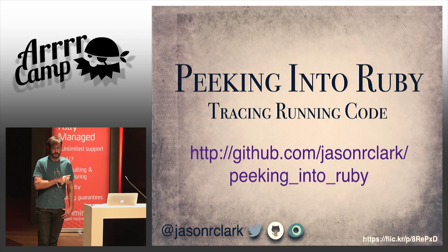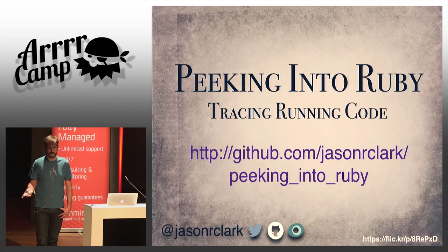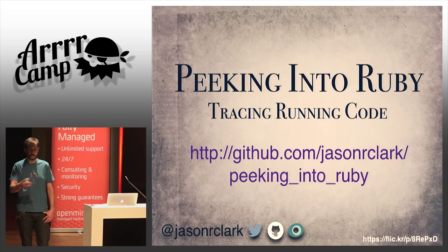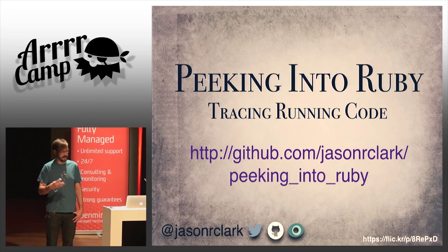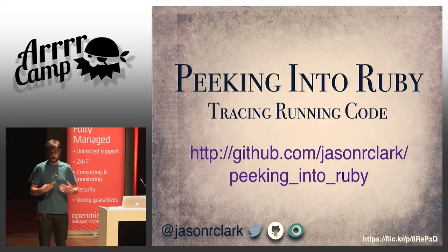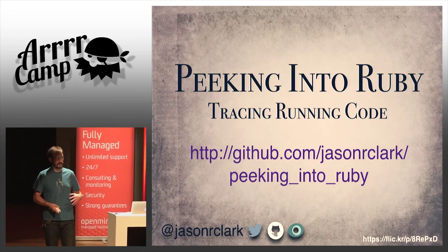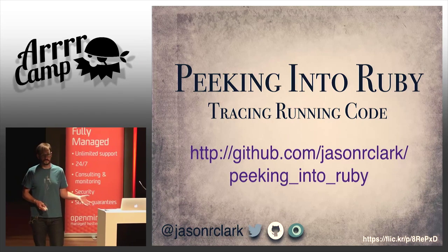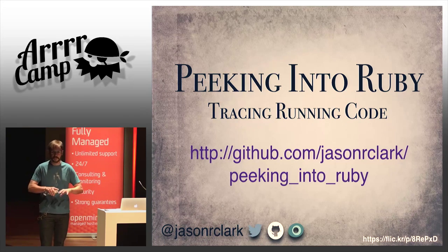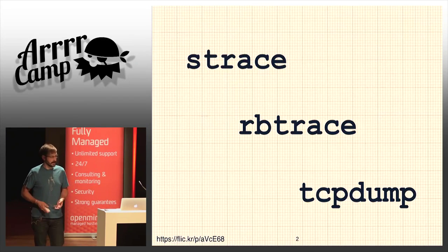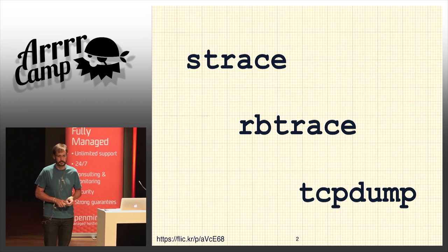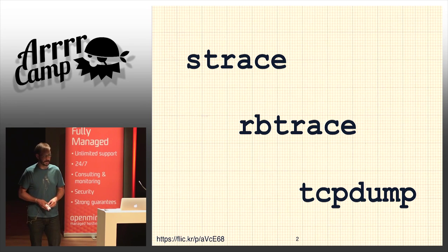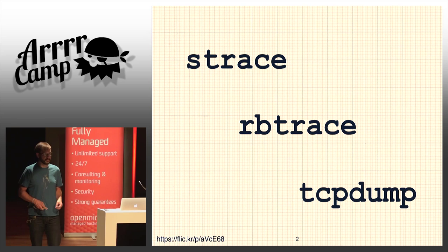That URL there provides some examples of what I'm going to be talking about today. I'm really glad that Laura gave her presentation about Docker because all of the examples that I have are set up as Docker files that you can run with Docker. What we're going to talk about is a set of tools that you can use to look at Ruby's behavior from the outside. Specifically, we're going to look at strace, rbtrace, and tcpdump. Those Docker files in that repo will let you go offline and check those out, run them, and play with the tools yourself.